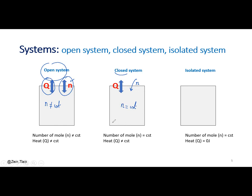In the case of a closed system, we cannot add N, so N must be constant inside the system because it's closed. However, the wall of the system is not isolated, so we can have an exchange of energy between the internal and external medium. In this case we have Q — if the energy is gained by the system, Q is hot; if energy is released, Q is cold.